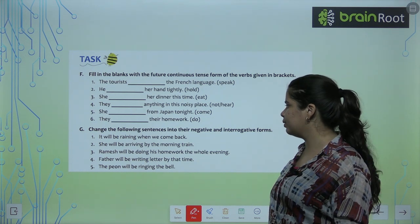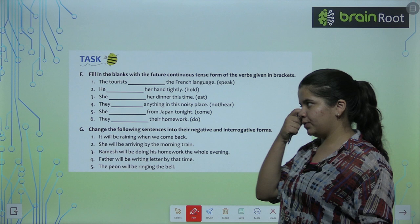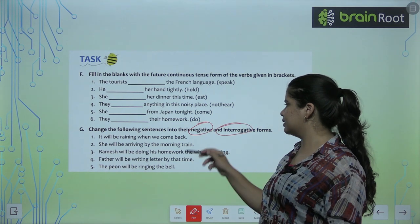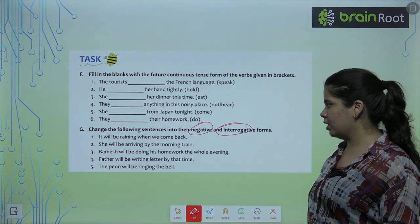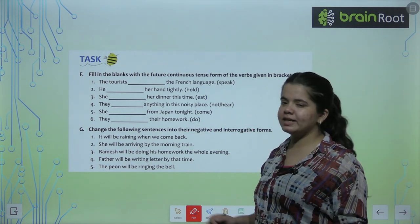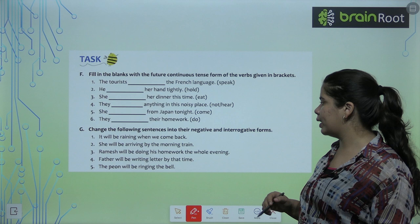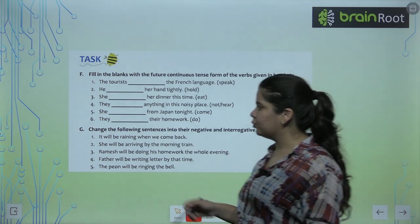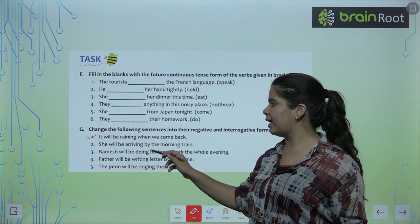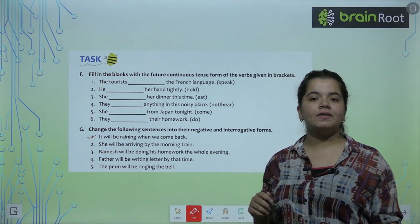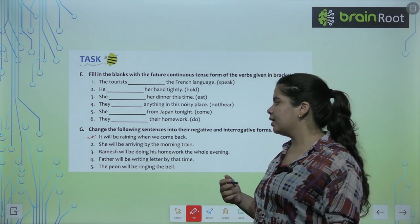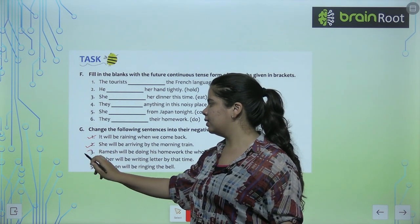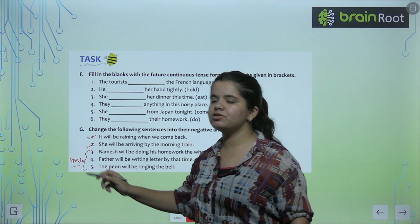We have task F, fill in the blanks with future continuous tense. The tourists will be speaking the French language. You have to note that when we use future tense, future continuous tense, will be or shall be plus ING and first form of the verb. First form plus will be, shall be, plus ING. He will be holding her hand tightly. She will be eating her dinner this time. They will not be hearing anything in the noisy place. She will be coming from Japan tonight. They will be doing their homework. Next, change the following sentences into negative and interrogative forms.